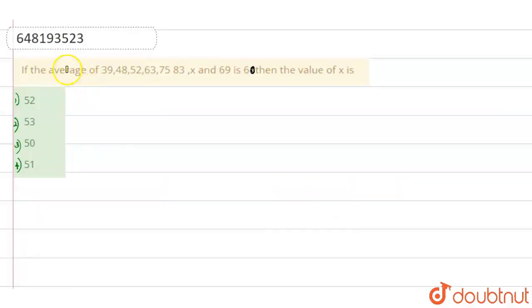Hello everyone, today we will solve the question. The question says: if the average of 39, 48, 52, 63, 75, 83, X, and 69 is 60, then the value of X is...